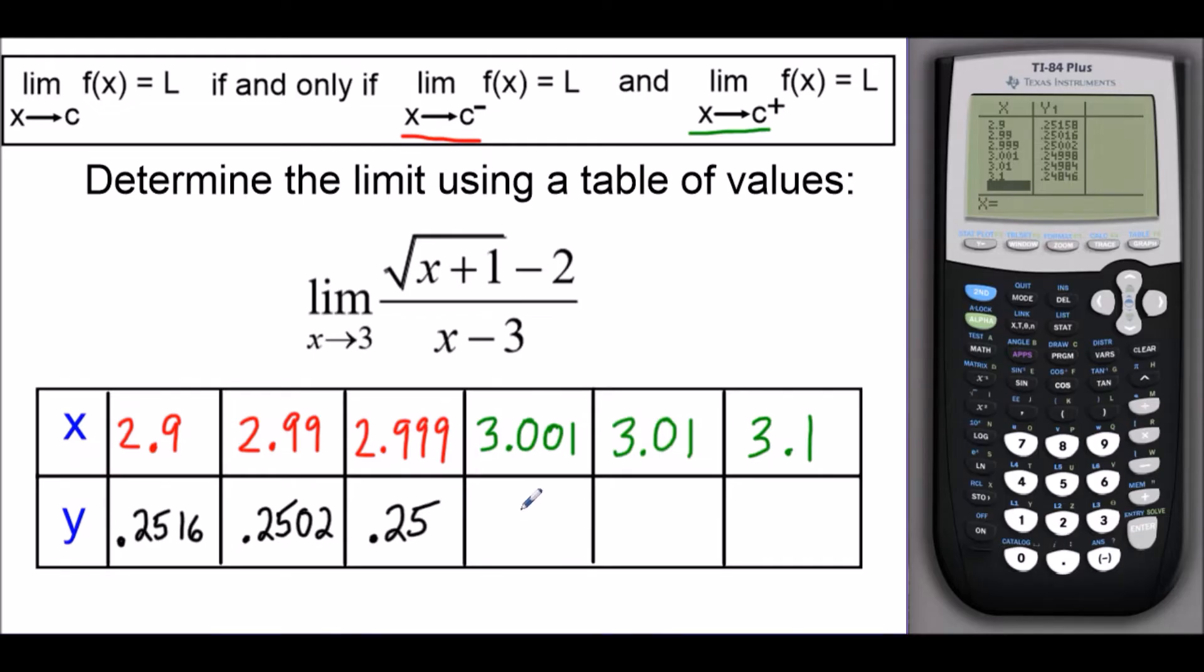And now if we look at the next entry, 3.001, this 8 is going to bump this up to the next 10, so ultimately that value is also going to round to 0.25 here. And then for 3.01, we're going to round to 0.2498. And then the last entry, 3.1, we'll round up to 0.2485.